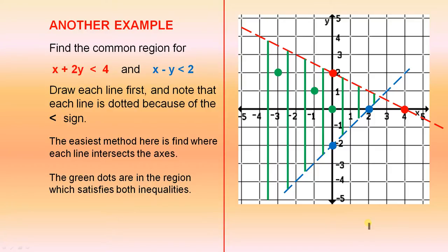The green dots are in the region which satisfies both inequalities. So there is the red line, that's the blue line, here are three dots. If you substitute each of those three dots into each of those inequalities, the answer is true in every case.